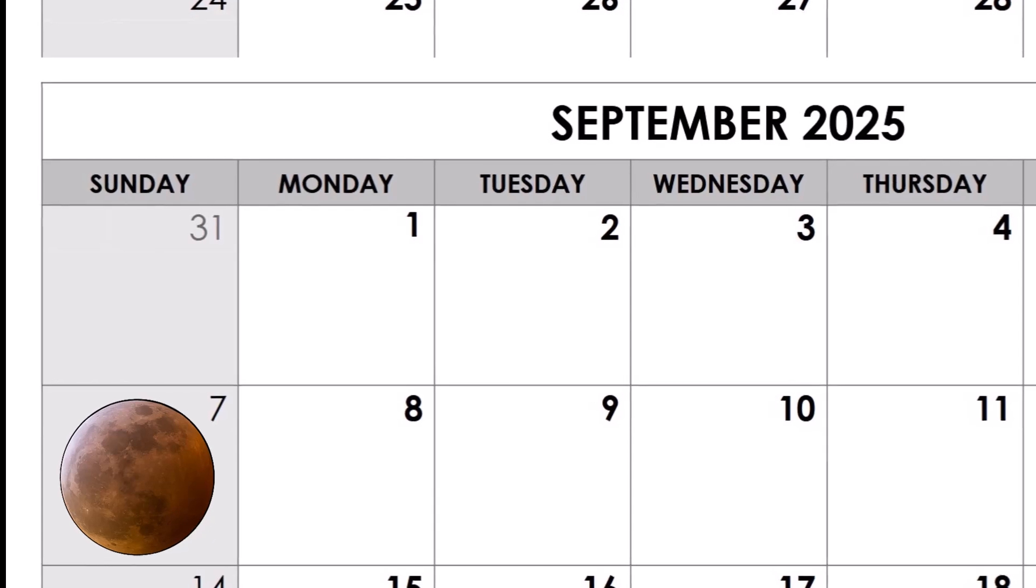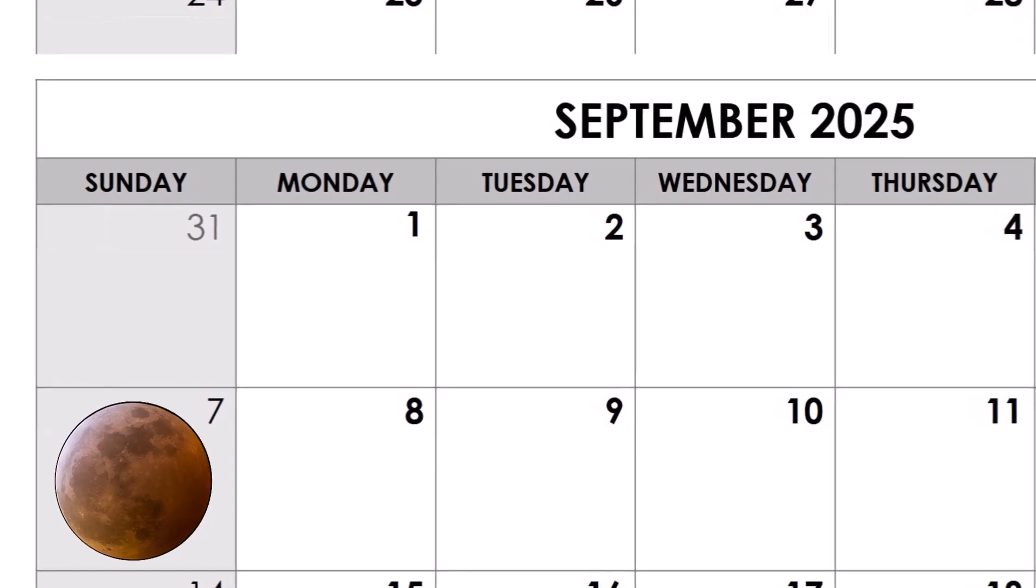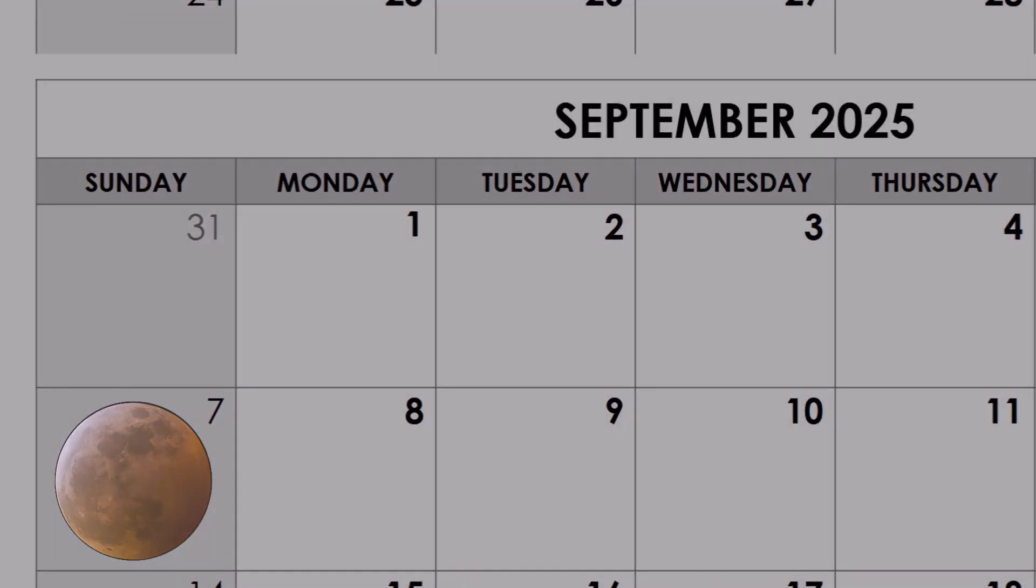This lunar eclipse is very, very similar to the one that happened in March in terms of how long it'll last and how dark the moon will get, as well as how high up in the sky it'll be. But overall, the September event is going to be the better one of the two.